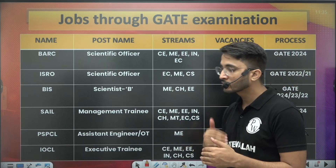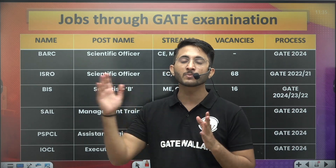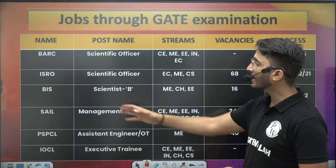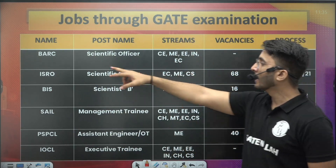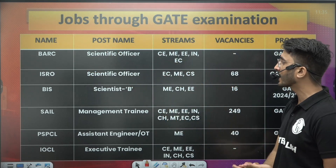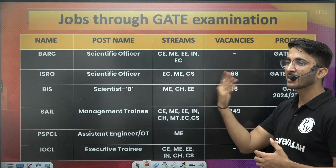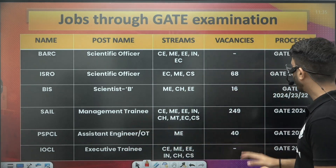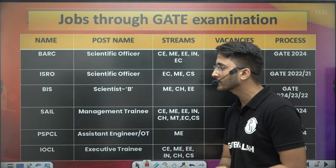First of all, I want to present this data — we researched a lot and collected it from the last three years of notifications. By observing the trend of the last three years, you can see which PSUs released their official notifications through GATE and for which branches. The PSU name, organization name, position, stream/branch, and vacancies are mentioned. The GATE year — 2024, 2023, or 2022 — when they released their notification is also mentioned.